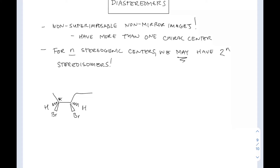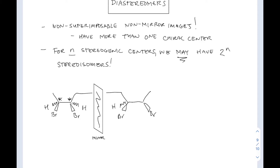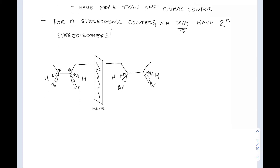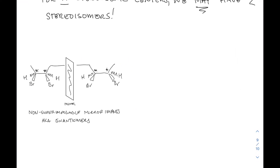Let's draw one out. We've got this compound with two bromines on it, and the two asterisks indicate two stereogenic centers. Now I'm drawing the mirror image of this compound. Since there are two stereogenic centers, what we've drawn is a non-superimposable mirror image — also known as enantiomers. You can check this for yourself to confirm they're non-superimposable, because those two stereogenic centers exist.